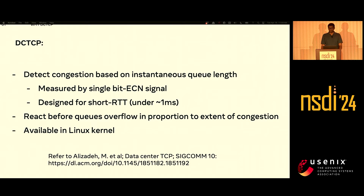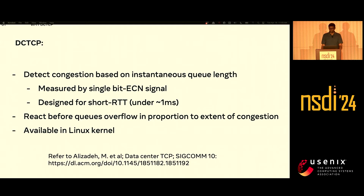DCTCP is a mature congestion control algorithm that is well-studied and has proven efficiency wins in other production networks. DCTCP's superpower comes from its ECN signal. ECN indicates the current queue occupancy. You configure an ECN threshold on the switch queues, and when the threshold is reached, the switch marks packets with the congestion experience bit. When the sender sees the congestion experience bit, it can detect the level of congestion in the network and thus react to it. I've referenced the original DCTCP paper in the slide — it's a great read for anyone who wants to understand more about the protocol.